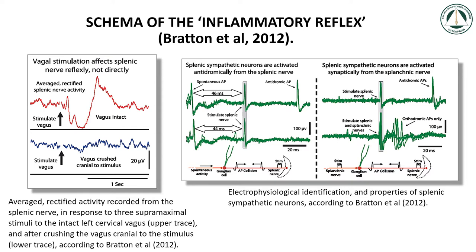The diagrams on the right represent the electrophysiological identification and properties of splenic sympathetic neurons according to Bratton et al. 2012. Each trace shows five superimposed sweeps. Central grey bars cover the stimulus artifacts. Left panel shows a collision test, proving antidromic activation from the splenic nerve. Right panel shows orthodromic activation from the splenic nerve.